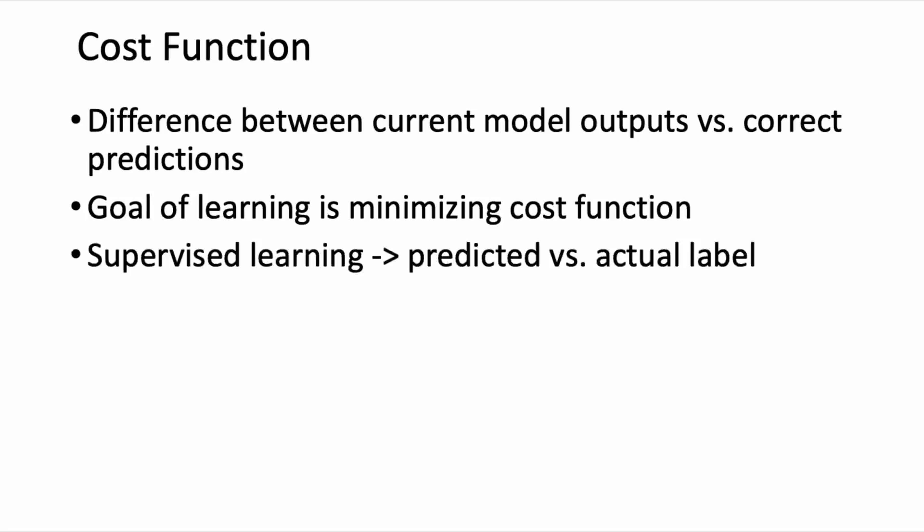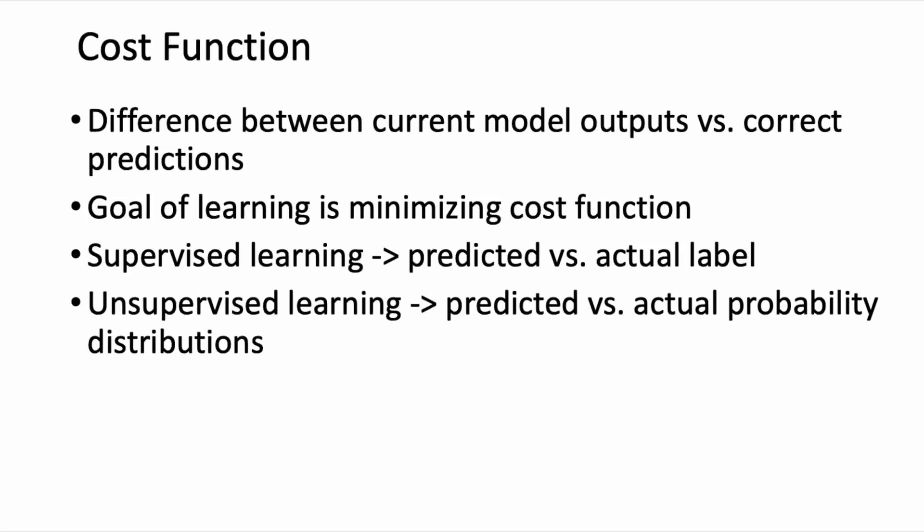For supervised learning models, the cost function is some measure of the difference between the model's predicted labels and the actual labels in our training set. For unsupervised learning models, these models are not predicting labels, but instead are predicting probabilistic patterns in our unlabeled data set. So the cost function for unsupervised learning models would be some measure of the difference between the model's current predicted probability distributions for patterns and the actual probability distributions for the patterns in the data set.